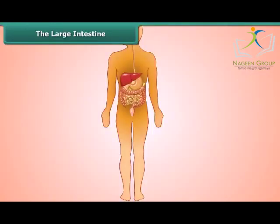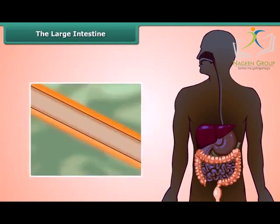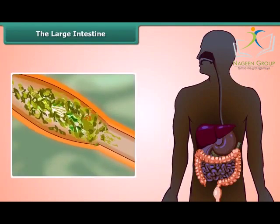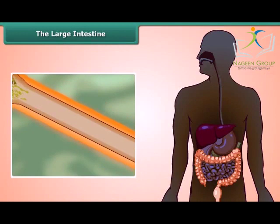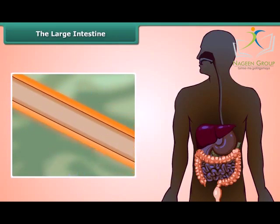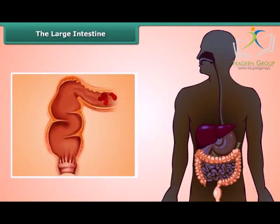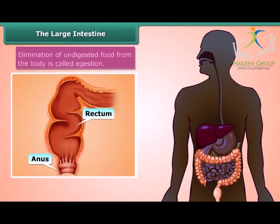When chyme gets into the large intestine, it absorbs most of the water and some salts from the undigested food. This step is important because recovering water keeps us safe from dehydration. Once most of the water is gone, solid waste moves to the rectum and the fecal matter is removed through the anus. This is called egestion. This is how human digestion completes.